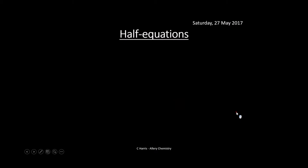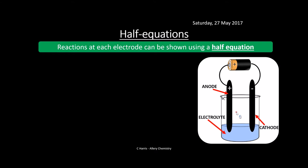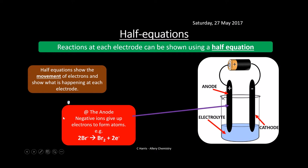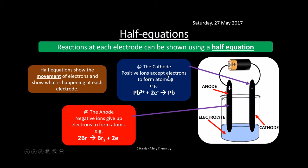Reactions at each electrode can be shown using half equations, which show the movement of electrons at each electrode. At the anode, negative ions give up electrons to form atoms — for example, bromide ions Br⁻ give up two electrons to form Br₂. At the cathode, positive ions accept electrons — for example, Pb²⁺ accepts two electrons to form lead, which plates the cathode.